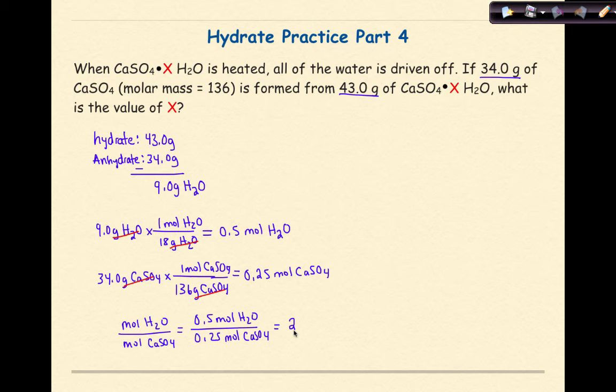My final formula is CaSO4·2H2O. That is the formula for CaSO4 dihydrate.